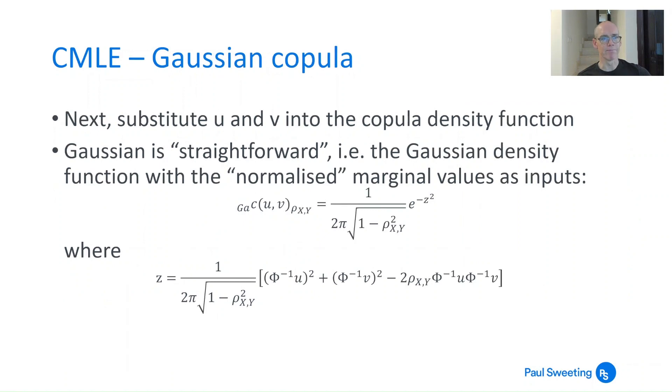For a Gaussian copula, you're going to substitute u and v into the copula density function. The Gaussian copula is straightforward because the Gaussian density function starts with a density function rather than a distribution function, so it's not overly complicated. If you look at the equation, all that's basically saying is you're taking those inputs, normalizing them with φ^(-1), and then plugging them into that formula using the calculated value of ρ described earlier.